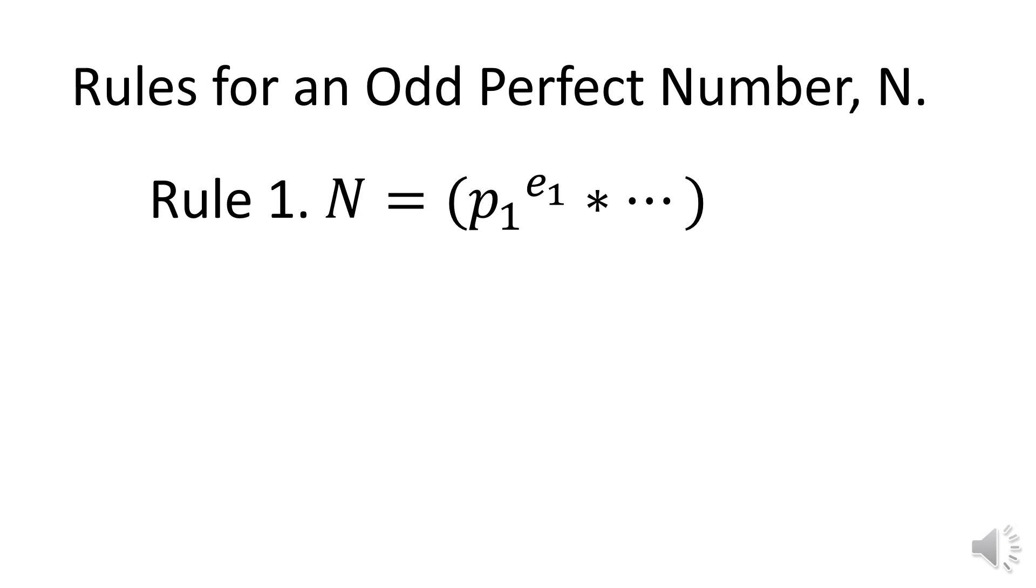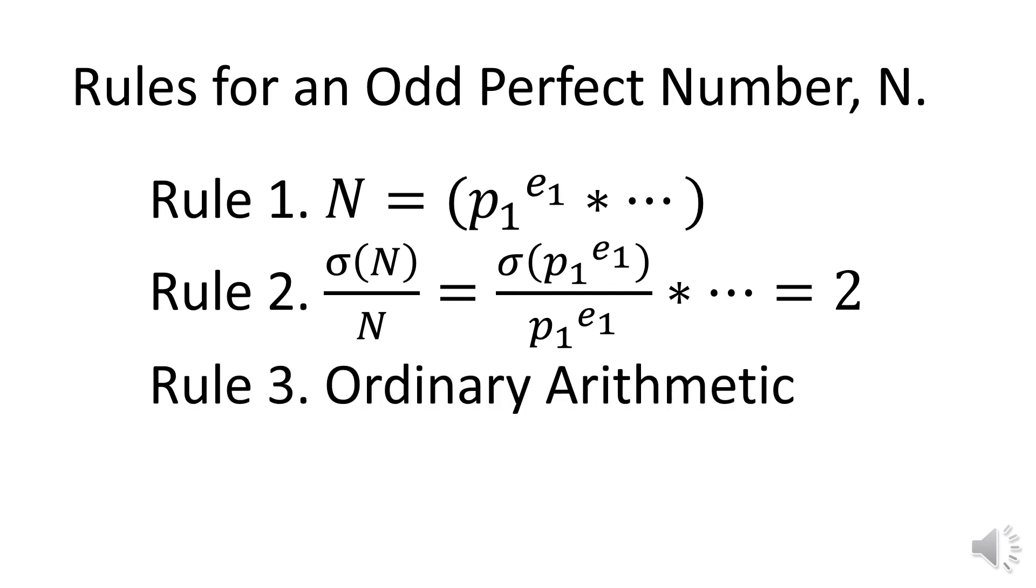Rules for an odd perfect number N are these: Rule one, N is the product of odd prime powers. Rule two, N is the sum of divisors of N divided by N. N has one special prime to make the quotient two. Rule three follows the rules for ordinary arithmetic, and N exists.